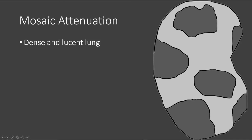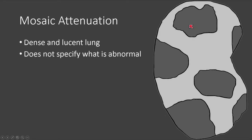Mosaic attenuation basically means that there are dense and lucent areas within the lung parenchyma. Note that when we talk about mosaic attenuation, it does not specify what portion of the lung is abnormal. All it's saying is that we're acknowledging the fact that there are both areas of density and lucency within the lung.